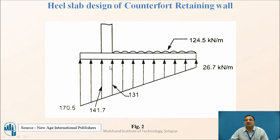Because the net pressure is maximum downwards, the heel slab bends such that tension is at the top. Therefore, for the heel slab the design steel is placed at the top. This is the opposite of the toe slab, where the slab bends upward and tension is at the bottom, so steel is placed at the bottom for the toe slab.